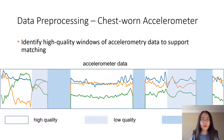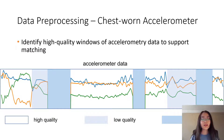Different portions of accelerometry data can vary significantly in quality due to missing data points as the result of wireless transmission problems. In this work, we sample windows where each second of data contains more than 75% of valid data points.